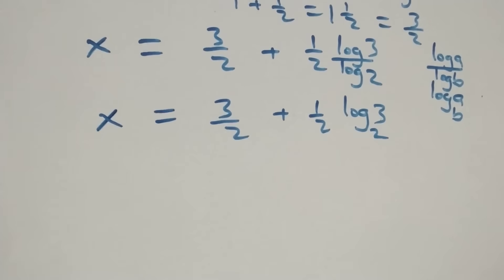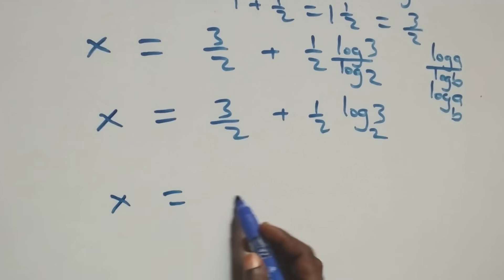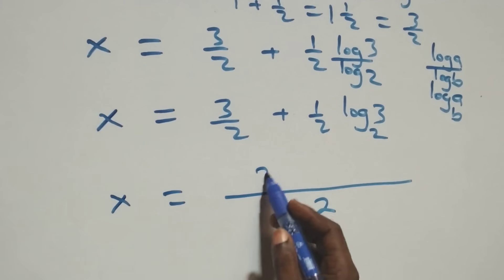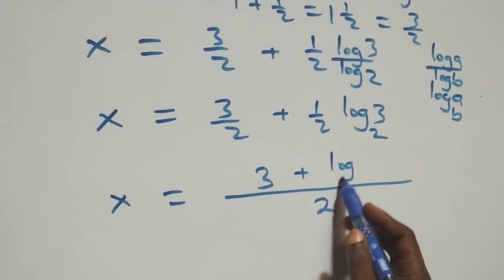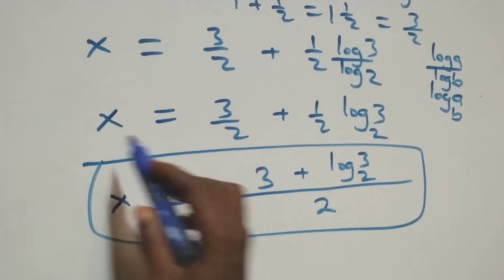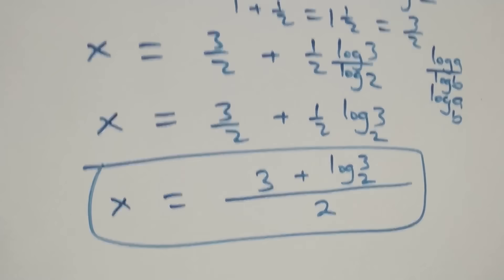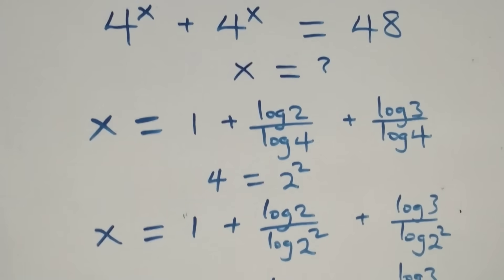We can bring this together as one fraction with denominator 2: x equals to 3 plus log 3 base 2, all over 2. So here we have the value of x. Let's check if this satisfies the original problem.